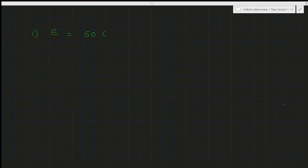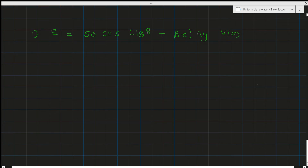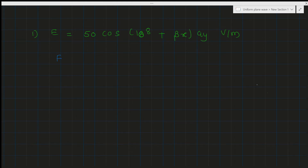Hello, in today's session we are going to solve problems based on the uniform plane wave. The first problem is E = 50cos(10^8 + βx) ay volts per meter. When solving such problems, we must know some things related to wave representation.